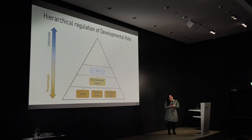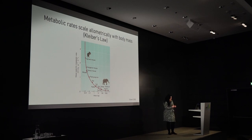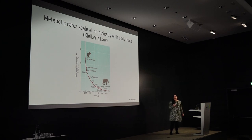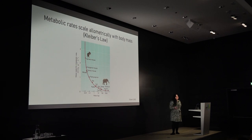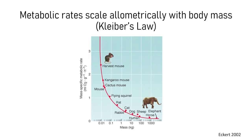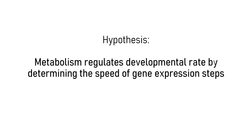The next question is what gives rise to differences in gene expression kinetics between species. Our hypothesis-based approach started by thinking about Kleiber's law: the well-described relationship between body mass and metabolic rate, where smaller animals tend to have a higher mass-specific metabolic rate. Interestingly, those smaller animals with accelerated metabolic rates also tend to undergo embryogenesis faster. Our hypothesis was that metabolism could regulate developmental rate by determining the speed of those gene expression steps.